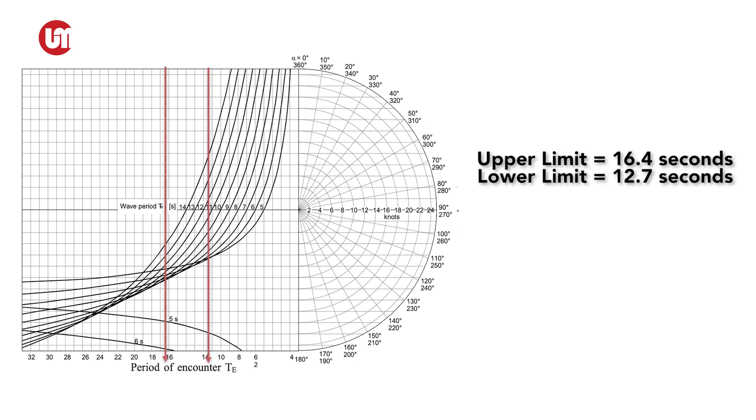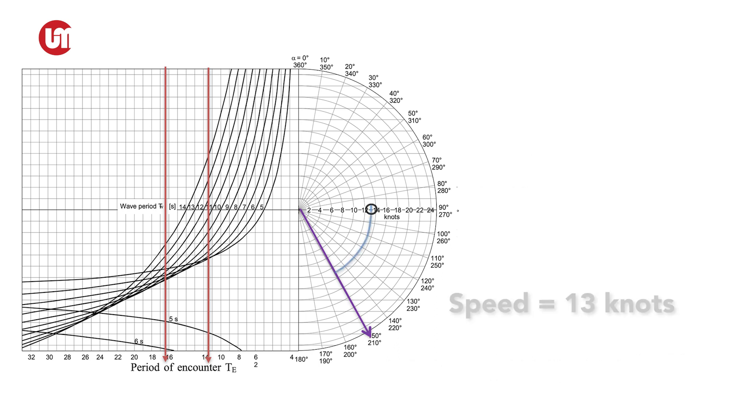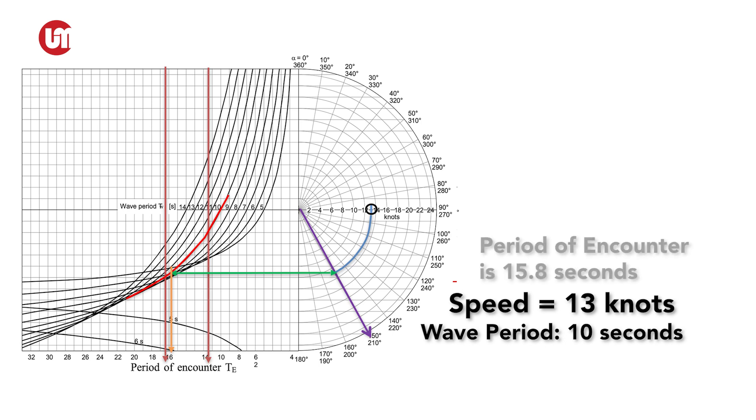You have to enter the dangerous zones into the diagram and get the angle of encounter between the ship's course and wave direction. This is usually the difference between the ship's course and the wave direction. Then enter the actual speed, mark the wave period on the curve in the diagram and extend the speed curve until the line will intersect with the wave period curve. From the intersection, draw a line perpendicular downwards until it intersects with the period of encounter. We can clearly see that the ship is inside the danger zone.